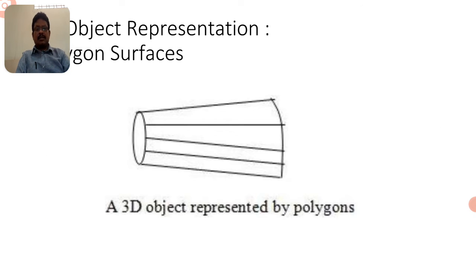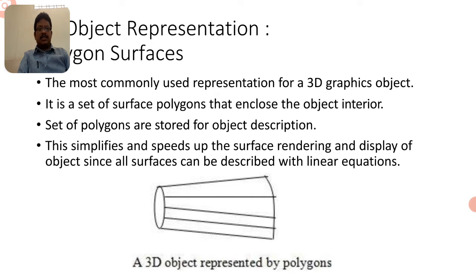The first category in object representation is polygon surfaces. The set of surfaces is nothing but polygon surfaces. You can observe in this diagram a three-dimensional object represented by polygons. Polygon surfaces are the most commonly used representation for 3D graphics and animation. It is a set of surface polygons that enclose the object interior, and this set of polygons is stored for object description.